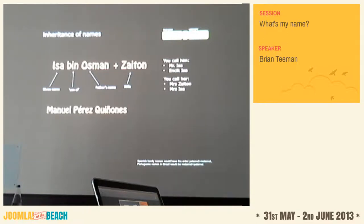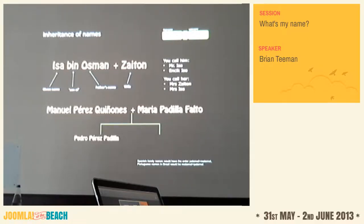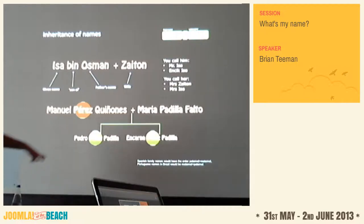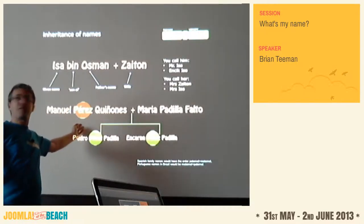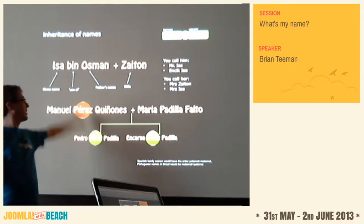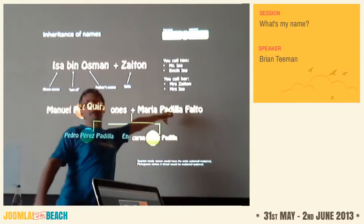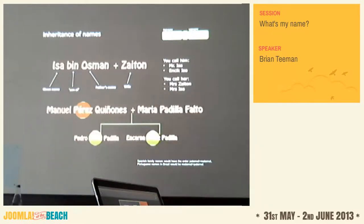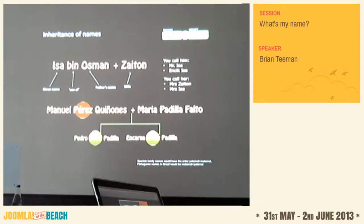Here's a Spanish naming example. When Manuel marries Maria and they have children Pedro and Encarnación, the children take the father's first surname and the mother's first surname. So Pedro becomes Pedro Perez Padilla — Perez from the father, Padilla being the paternal part of the mother's name. Now at a hotel booking, not only do the man and woman have different family names, but the children have completely different names too. What's going on? It gets very confusing.